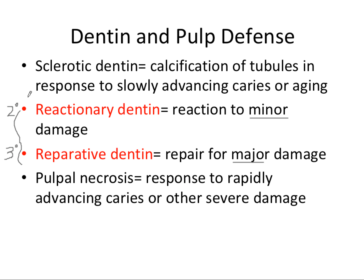In endodontics and operative dentistry, there's a technique called pulp capping, where you place a calcium hydroxide liner which irritates odontoblasts, and they'll form either reactionary or reparative dentin depending on how close you are to the pulp. This dynamic response of odontoblasts and secondary odontoblasts laying down new dentin forms a dentinal wall that acts as a barrier defending the pulp. Pulpal necrosis — where the tooth is dead and the pulp has been compromised — is the response to rapidly advancing caries or other severe damage.